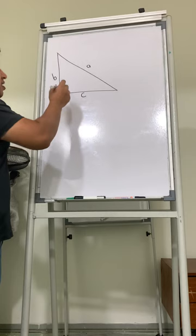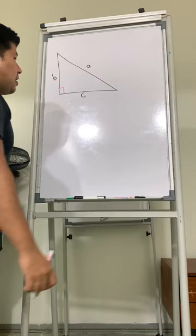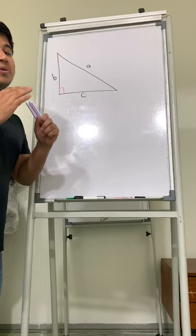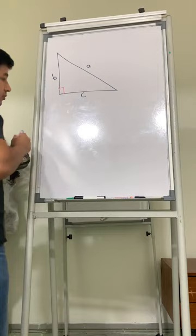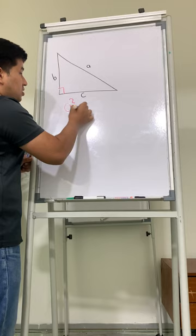In Pythagorean Theorem, we're going to talk about the relationship between the sides of the triangle. I want to have the relationship of C, B, and A, and there's a formula. The formula says a squared, which is the hypotenuse, is equal to b squared plus c squared.